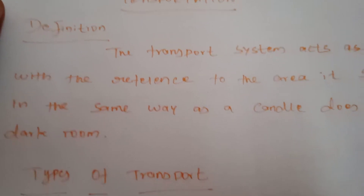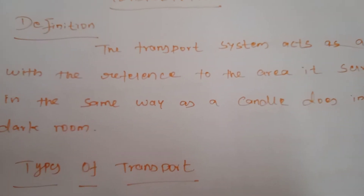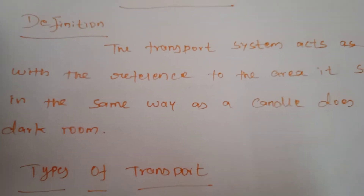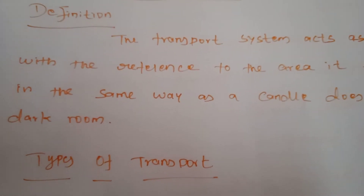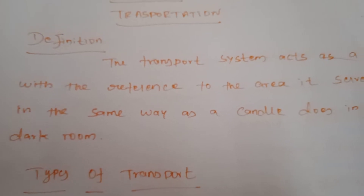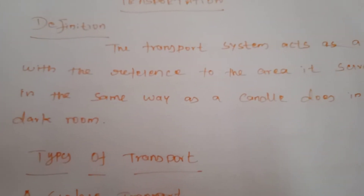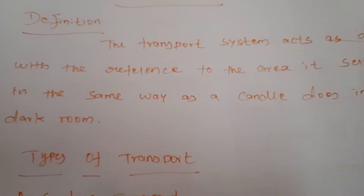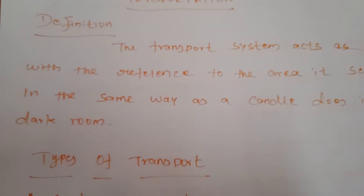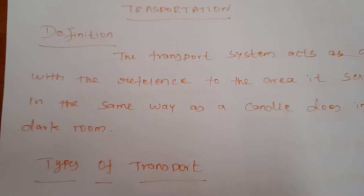According to KK Saxena, a commerce scholar, the transport system acts with reference to the area it serves in the same way as a candle does in a dark room. Like a candle lighting a dark room, transport helps all commodities reach the hands of consumers from the hands of producers. Without transport facilities, this is not possible. The term transport includes all occupations involving road, rail, canal, sea, and air transport.